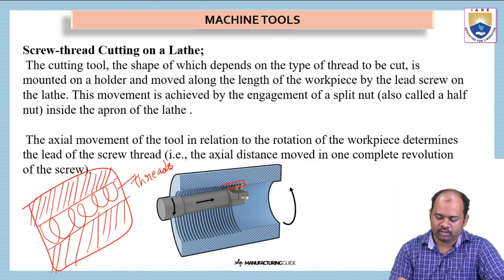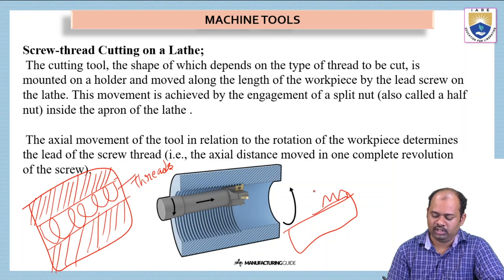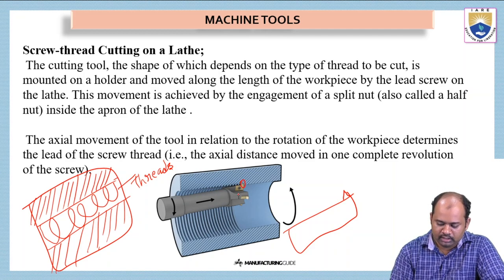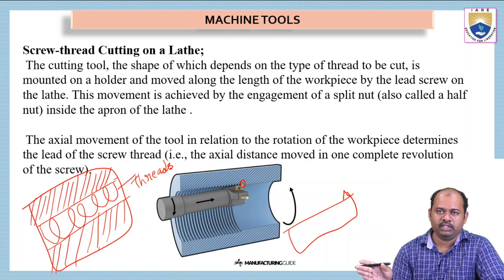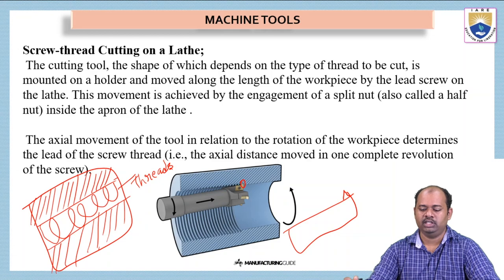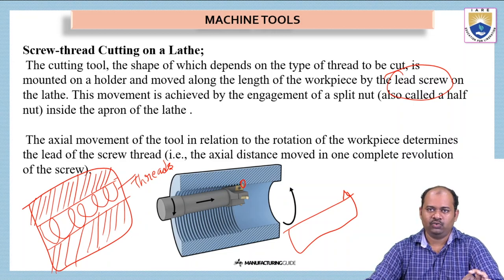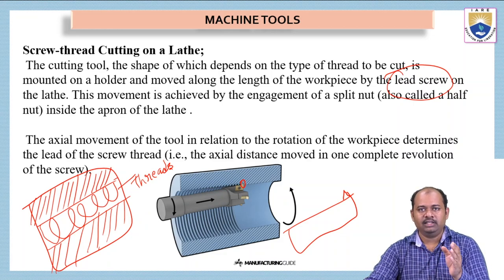This workpiece is well designed so that it makes only helical grooves. It will not have multiple teeth — it will only have one edge. Because of this single edge, we can drill threads into the internal surface of the workpiece. The cutting tool, the shape of which depends on the type of thread to be cut, is mounted on a holder and moved along the length of the workpiece by the lead screw on the lathe machine.